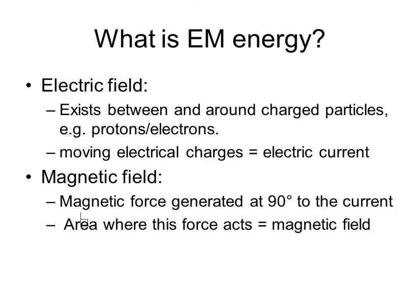Electromagnetic energy essentially exists as two forms. An electrical field exists between and around charged particles in the form of protons and electrons. Where electrical charges flow from positive to negative, this is an electric current. A magnetic force is set up at 90 degrees to the flow of electrical current, and the area in which this force acts is called a magnetic field. Both the magnetic and electrical fields will have an effect on charged particles.